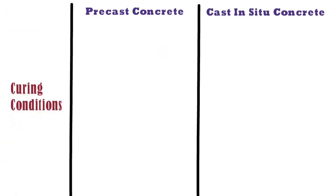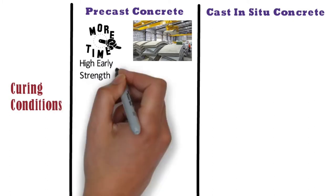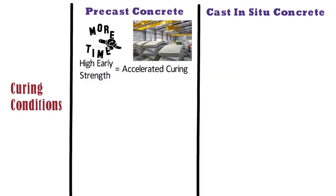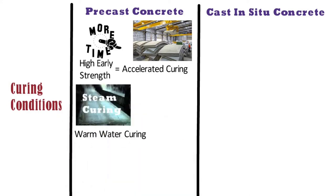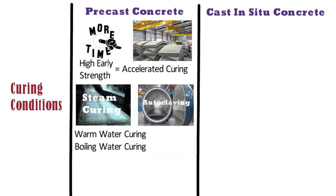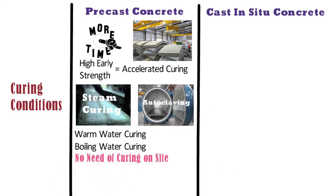In the construction industry, curing takes major time in project completion. In the precast concrete method, curing conditions can be controlled in a factory, and high early strength can be achieved with the help of accelerated curing. The most commonly adopted curing techniques are steam curing at atmospheric pressure, warm water curing, boiling water curing, and autoclaving. Hence, there is no need for curing on site after erection of members, as members are already cured in the factory for the desired number of days.